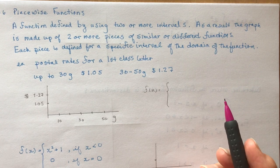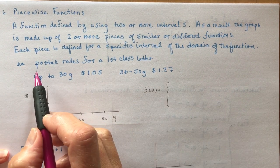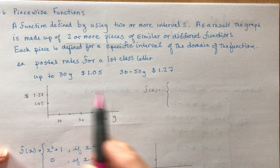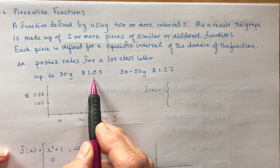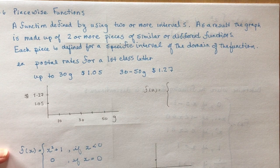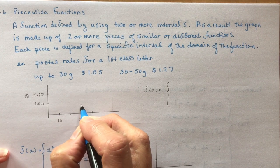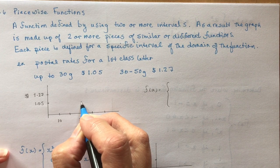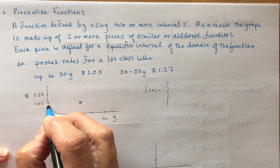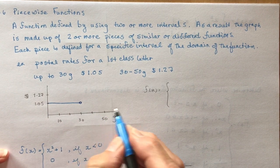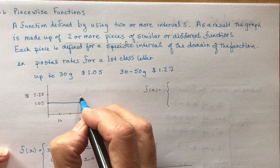Let's look at the first example: postal rates for a first class letter in Canada. Up to 30 grams is $1.05, but between 30 and 50 grams is $1.27. If I were to draw this on a graph, the first piece goes up to 30 grams at $1.05, and after 30 grams it changes price.